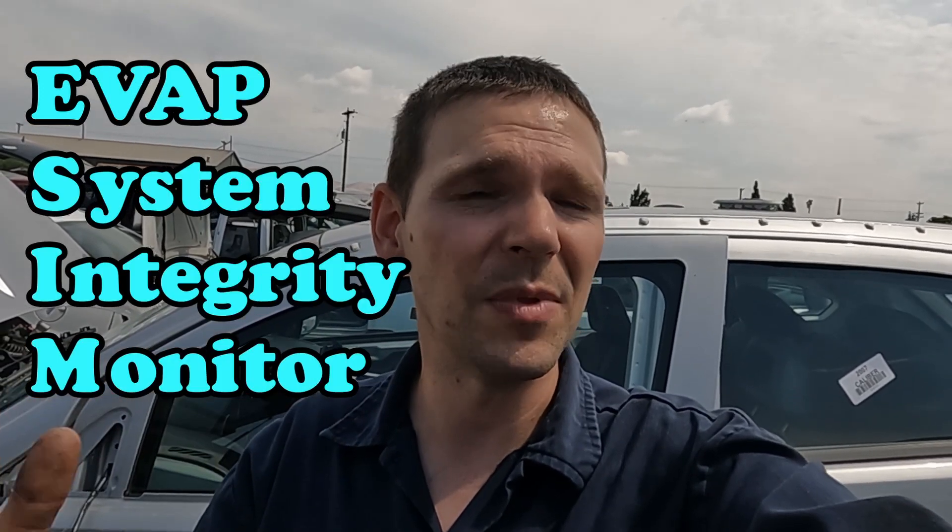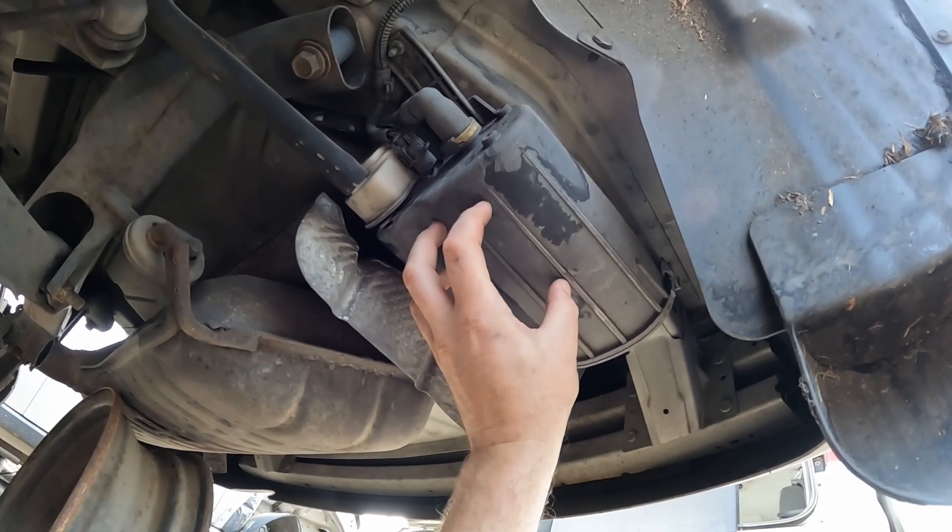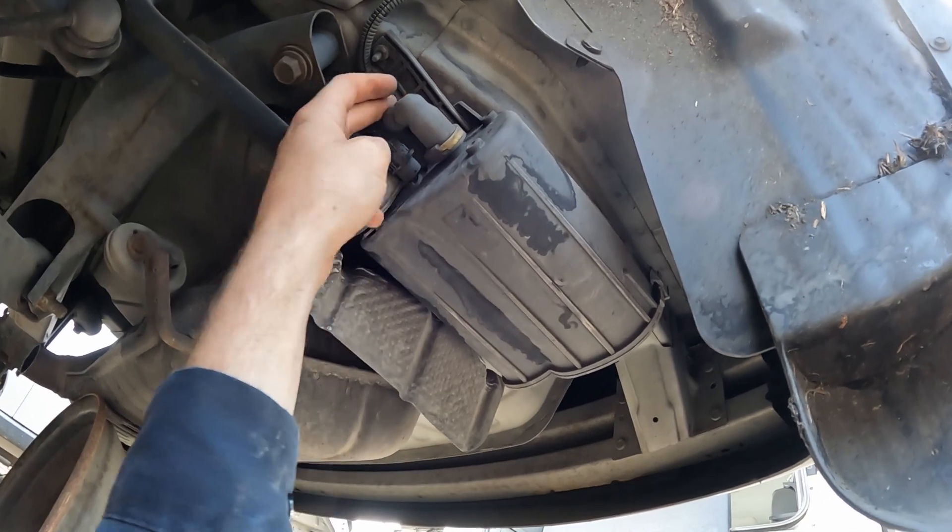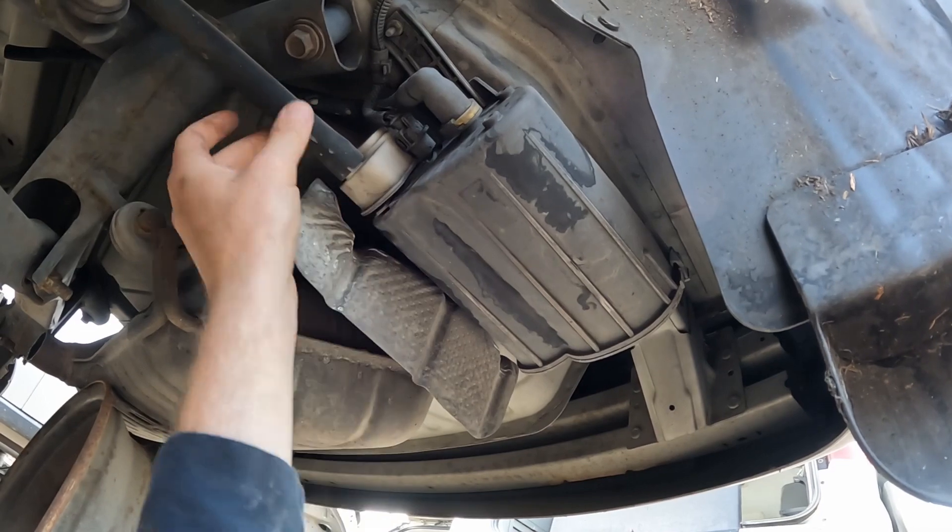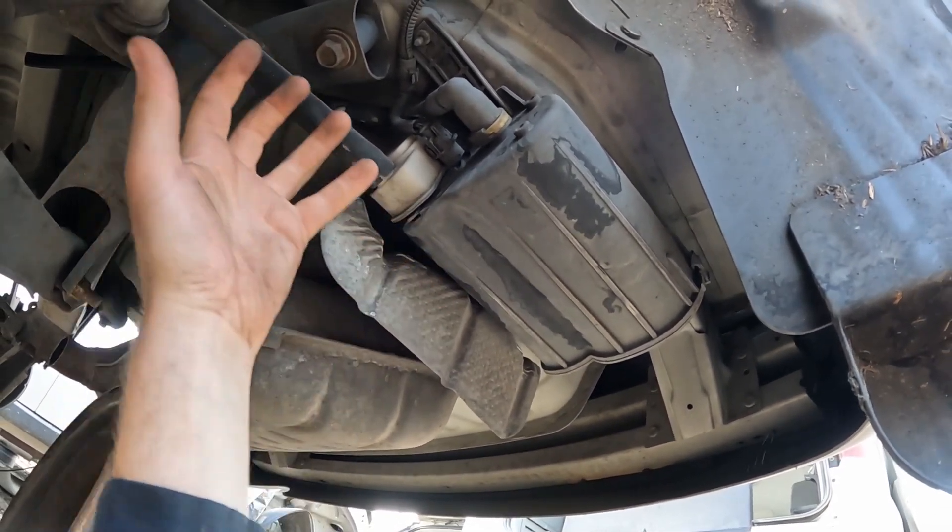So let's hop under, take a look. So this is our charcoal canister. This is the tube where the fuel vapors come in from the tank. This is our ESIM. It still vents. It still has a free-flowing vent.